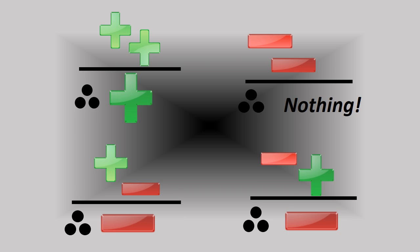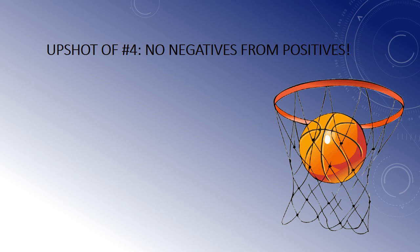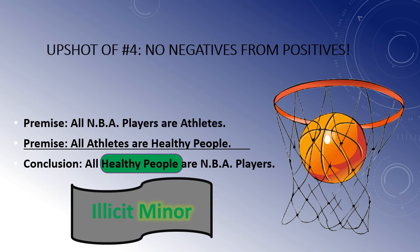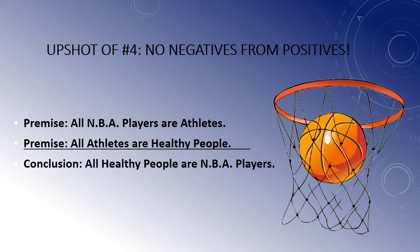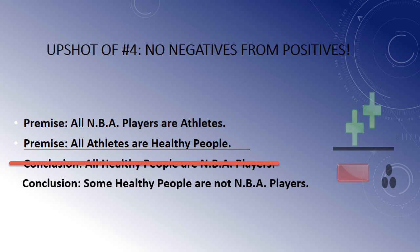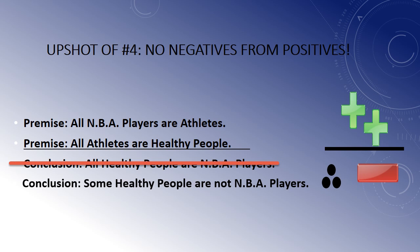To summarize rules three and four: you do get a positive conclusion, but only from two positive premises. The upshot of rule four is that you don't get negatives from positives. For example, changing the conclusion of our NBA argument to 'Some healthy people are not NBA players' — that does not follow from two positive premises at all. That commits the fallacy of trying to get a negative from two positives. From positives, you only get a positive.